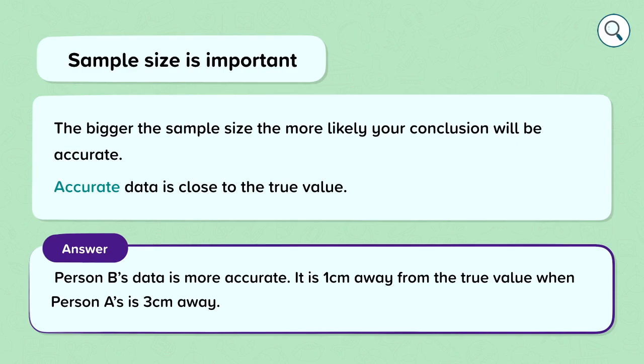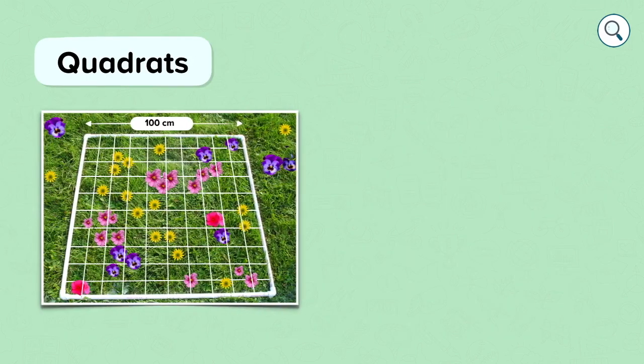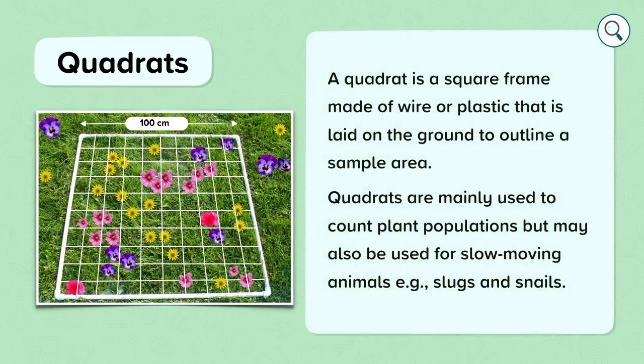Now we're going to look at a very important piece of equipment for ecologists called a quadrat. A quadrat is a square frame made of wire or plastic that is laid on the ground to outline a sample area. Quadrats are mainly used to count plant populations but may also be used for slow-moving animals for example slugs and snails.